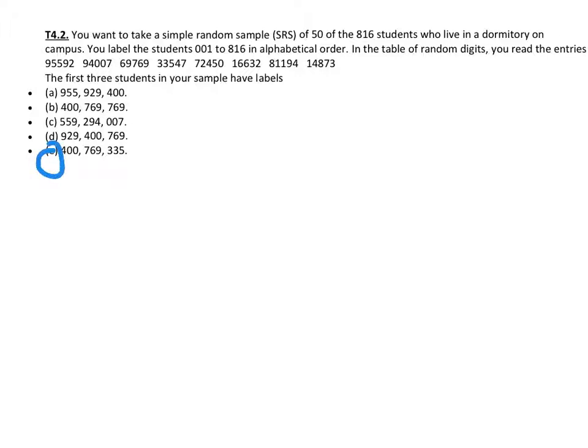Walking through that, the first one is 955, which we don't have. 929 we don't. The next one we do have is 400, then 769. We have another 769, but in this case, these are individual students, so repeats would not make sense. That one does not get included. The next one would be 335.